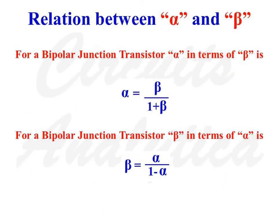Now, how can we relate alpha and beta? For a bipolar junction transistor, alpha in terms of beta is: alpha is equal to beta divided by 1 plus beta. And beta in terms of alpha is given as: beta is equal to alpha divided by 1 minus alpha.